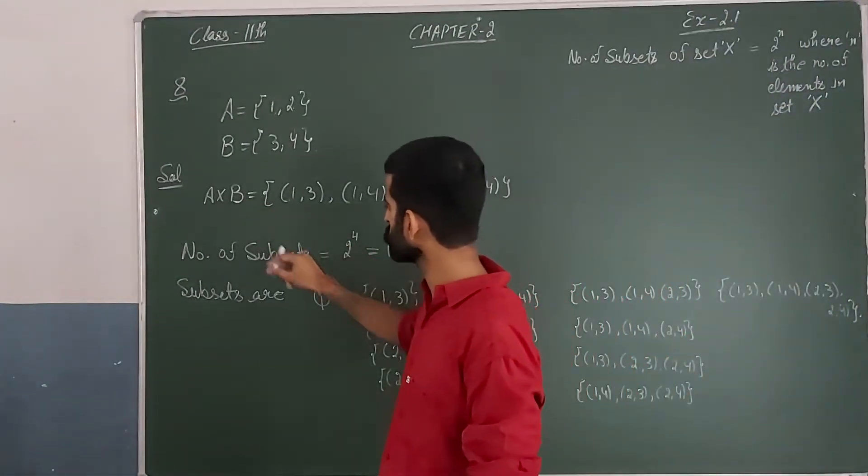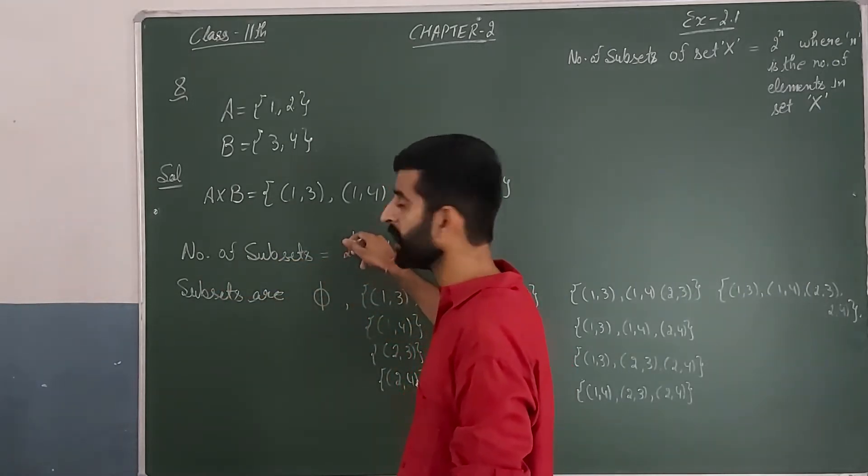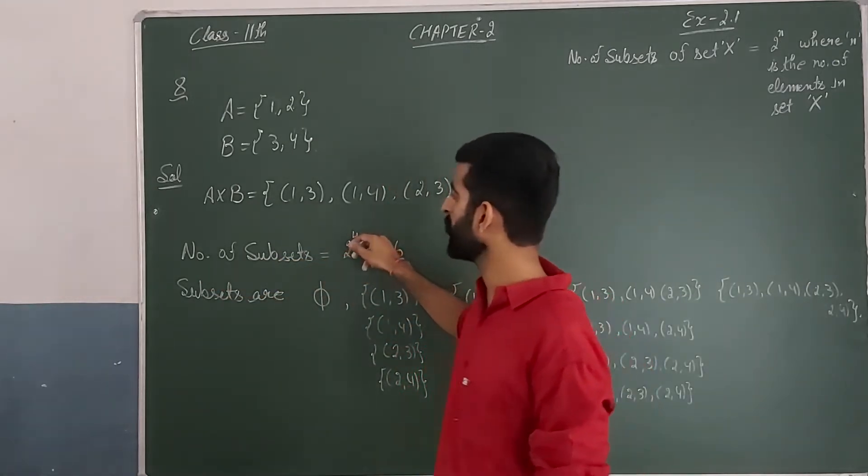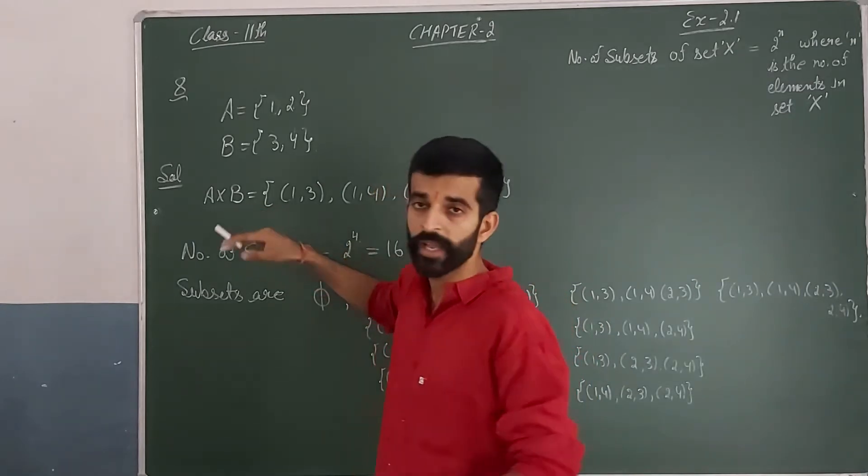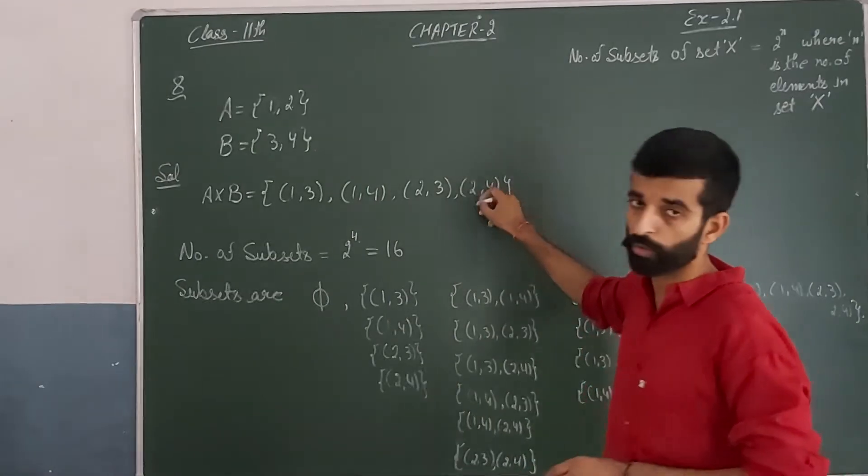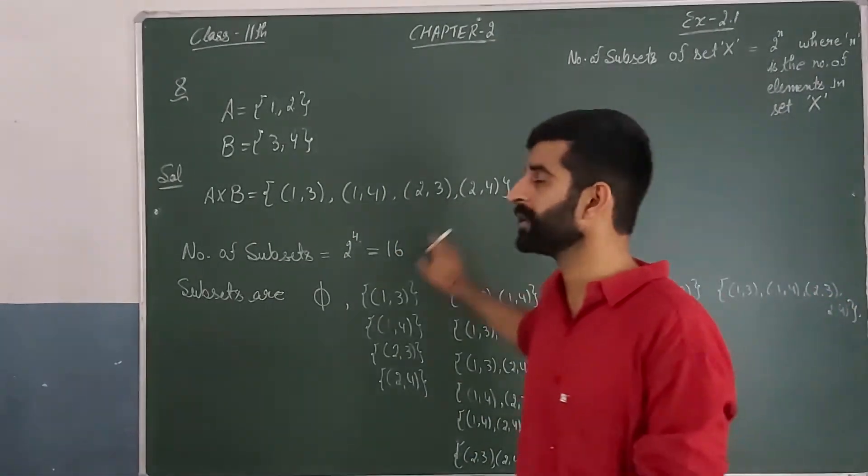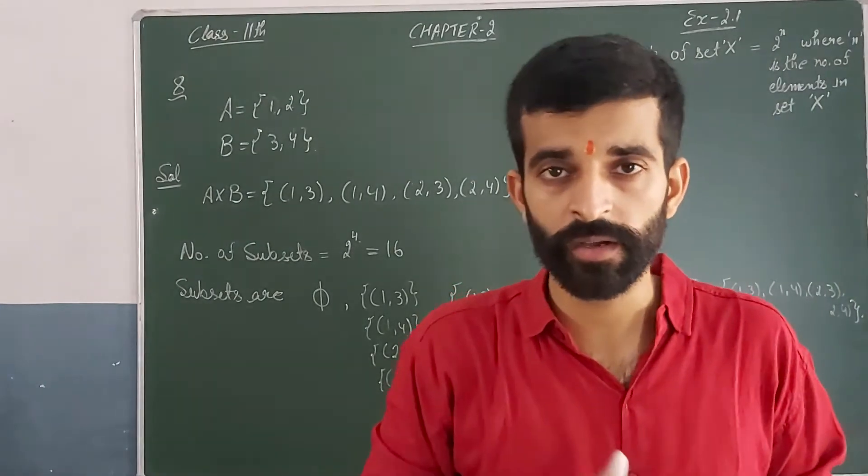So for A cross B subsets, the number of subsets equals 2 to the power n, where n is the number of elements in set A cross B. Now A cross B has elements 1, 2, 3, and 4. This will be 16. So A cross B will have 16 subsets.